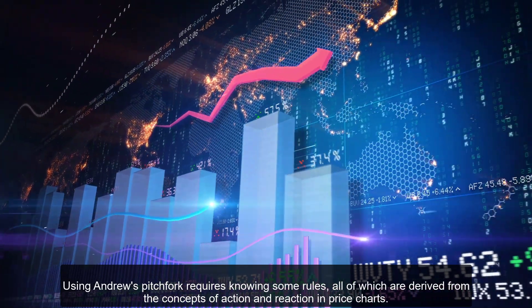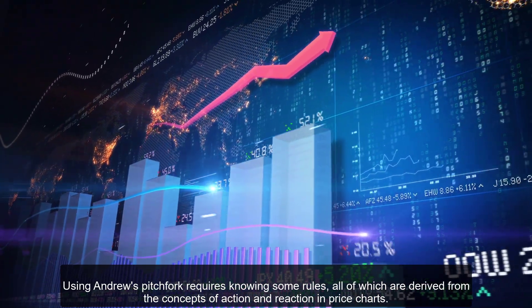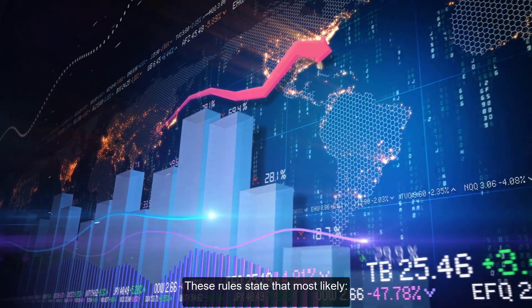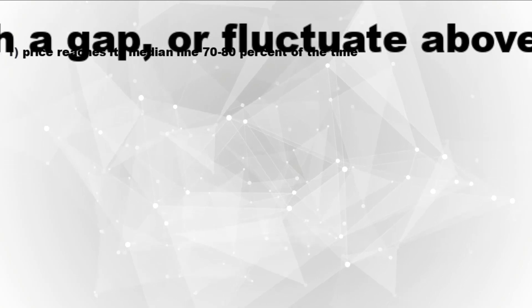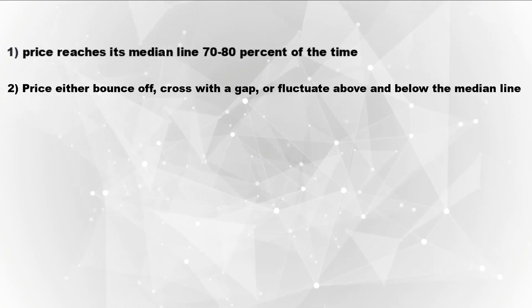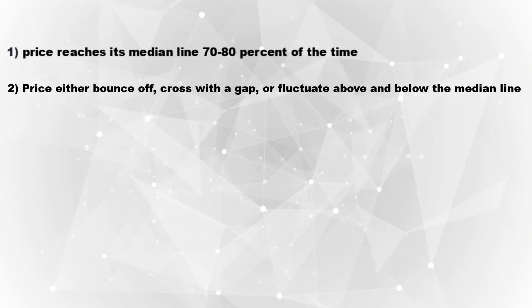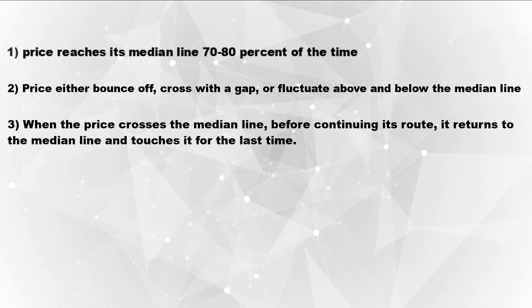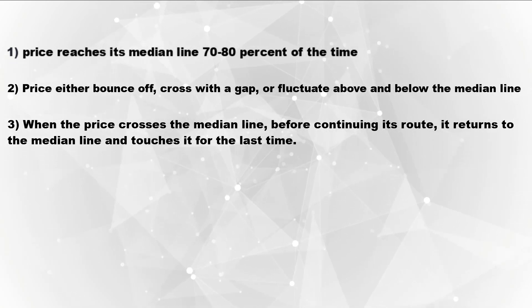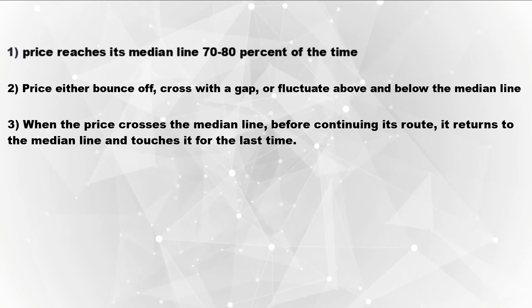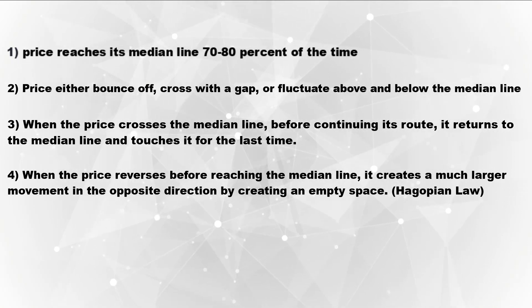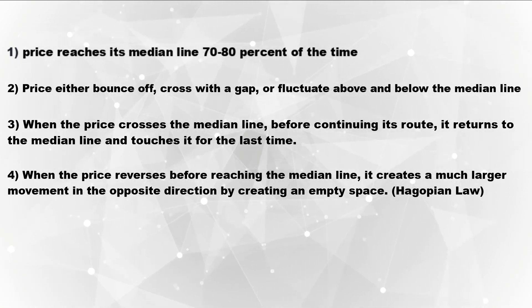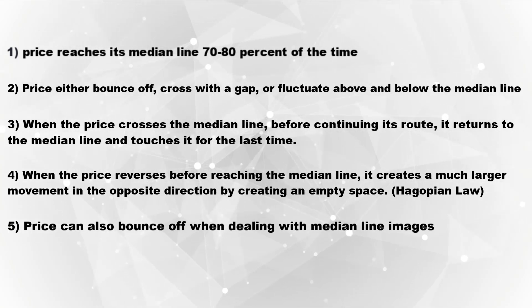Using Andrew's pitchfork requires knowing some rules, all of which are derived from the concept of action and reaction in price charts. These rules state that price most likely reaches its median line 70 to 80 percent of the time. Price either bounces off, crosses with a gap, or fluctuates above and below the median line. When the price crosses the median line, before continuing its route, it returns to the median line and touches it for the last time. When the price reverses before reaching the median line, it creates a much larger movement in the opposite direction by creating an empty space — the Agopian law. Price can also bounce off when dealing with median line images.